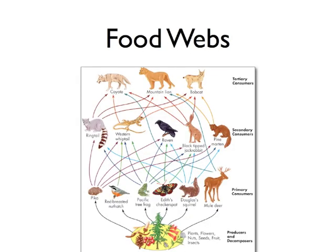A food web is slightly different from a food chain in that it shows multiple feeding relationships in the ecosystem. This way we can see the importance of different organisms in the ecosystem. For example, in this ecosystem, should the raven become extinct, it is likely that there will be more pikas, Douglas squirrels, Pacific tree frogs, and checkerspot butterflies, as the raven will no longer be consuming these organisms as a food source. Additionally, should a disease cause a decline in the number of Douglas squirrels, there would be less food for the black-tailed jackrabbit, which may in turn affect its population or increase competition for other sources of food, such as the Pacific tree frog.